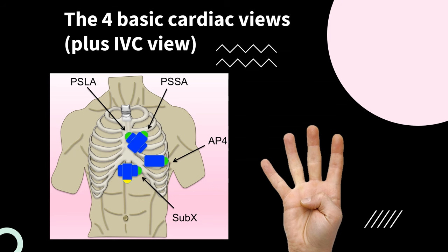We will use those three windows to find our four basic cardiac views, plus the IVC view. There will be two parasternal views, one apical view, and then one subxiphoid view with an IVC view thrown in at the end.